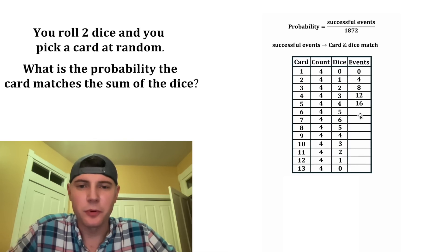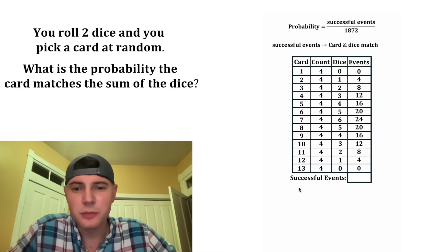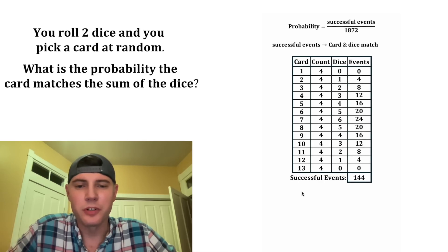4 times 3 is 12. 4 times 4 is 16. 20 and so on. Now if we sum all of these events, we'll have the total successful events. And these will all add up to 144. So we have 144 successful events.